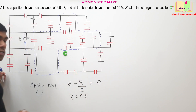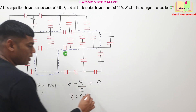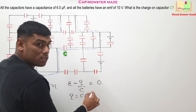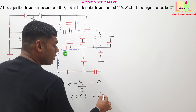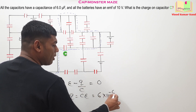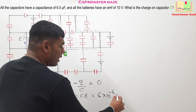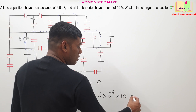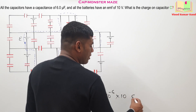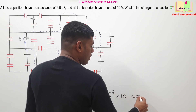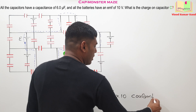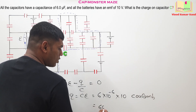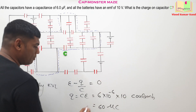So Q comes out to be C multiplied with epsilon. The C is given as 6 microfarads, so 6 × 10⁻⁶, and epsilon is 10 volts. Simplifying this, we get the charge on the capacitor as 60 microcoulombs.